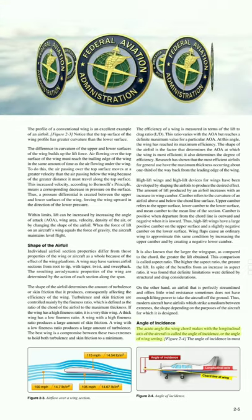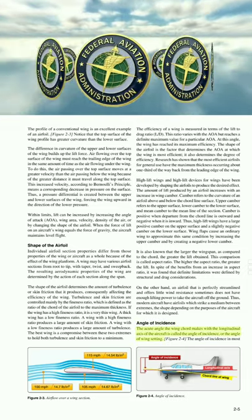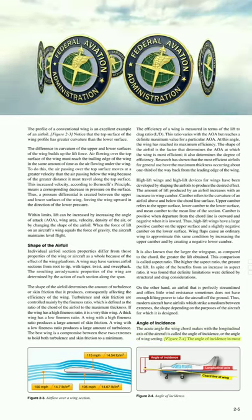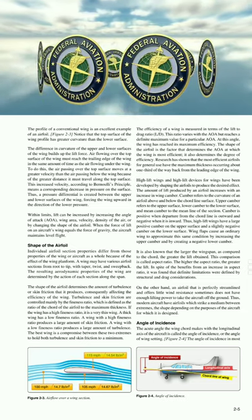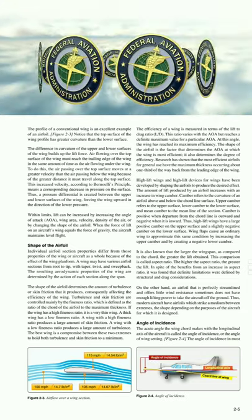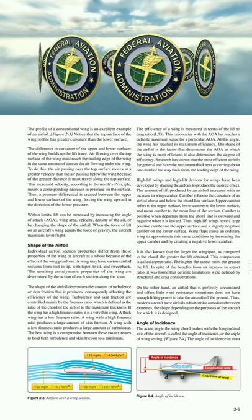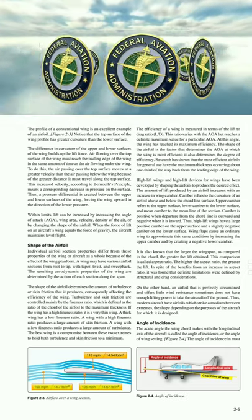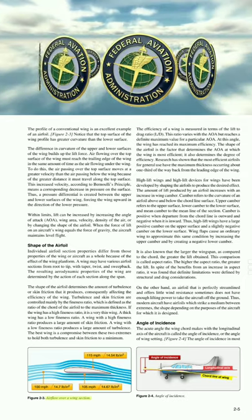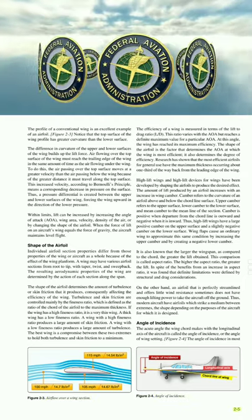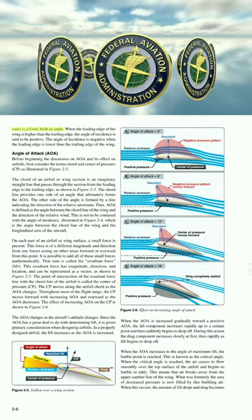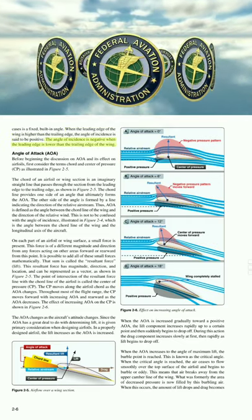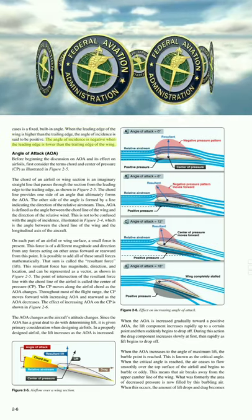Angle of incidence. The acute angle the wing chord makes with the longitudinal axis of the aircraft is called the angle of incidence, or the angle of wing setting. This is a fixed, built-in angle. When the leading edge of the wing is higher than the trailing edge, the angle of incidence is said to be positive. The angle of incidence is negative when the leading edge is lower than the trailing edge of the wing.